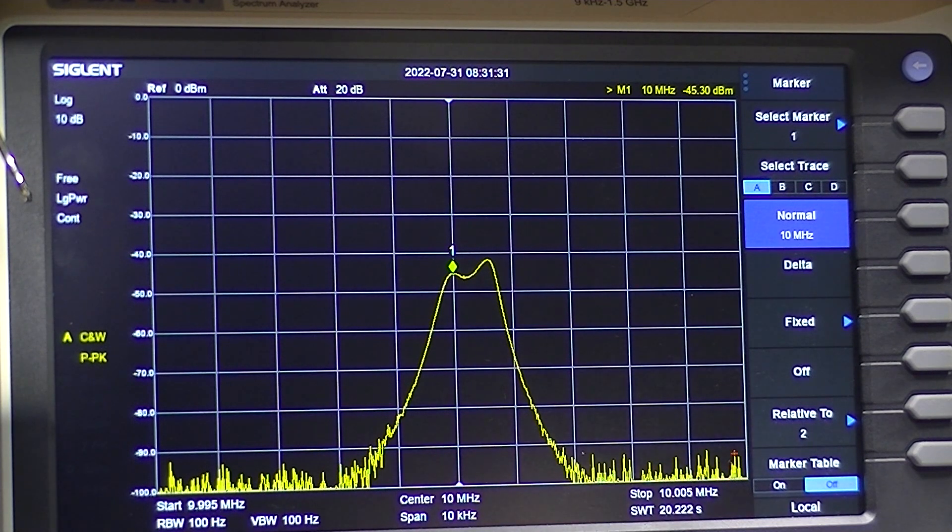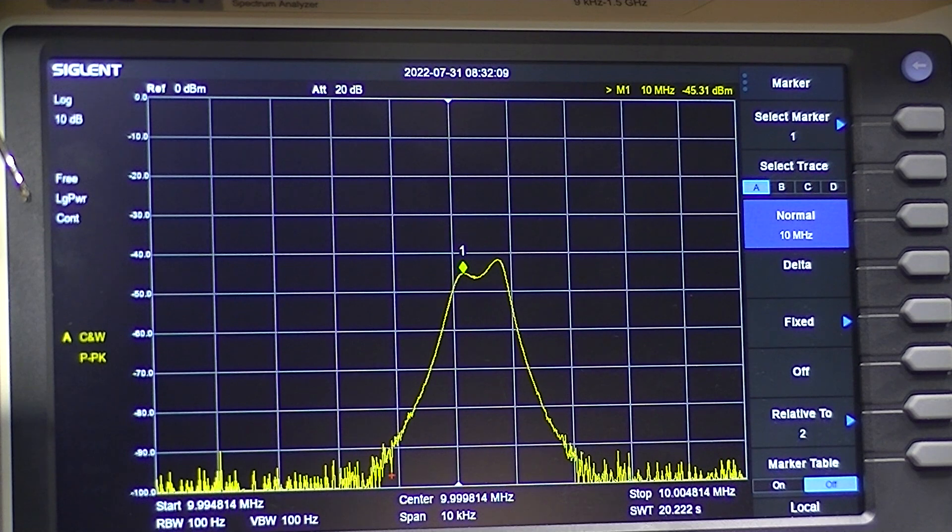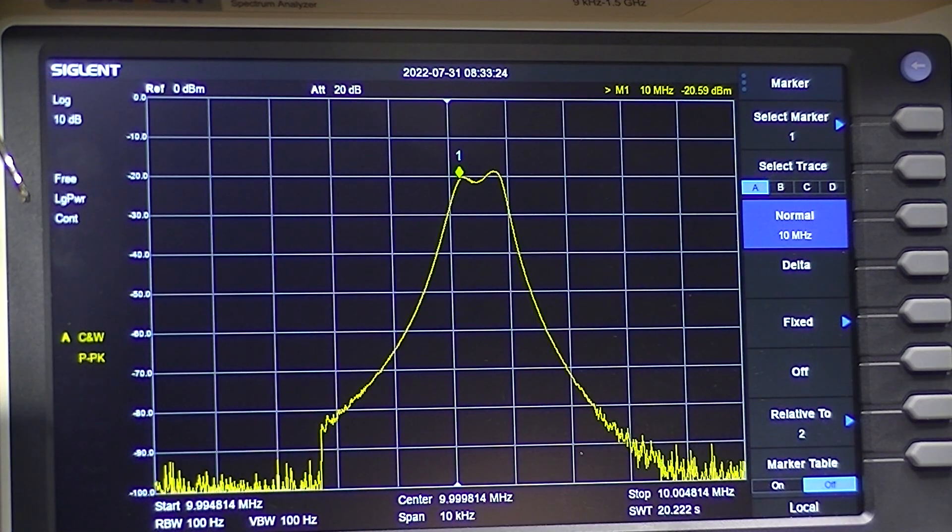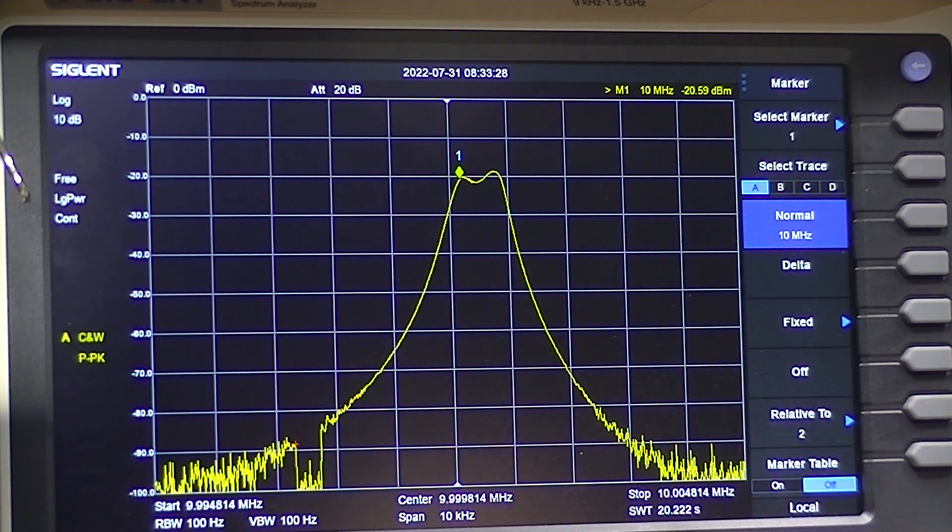Alright, here we are with the 10 MHz amplifier, minus 80 dB in. Okay, so there's the gain at 10 MHz without the preamp. And with the preamp it's minus 20 dBm output. So that gives us a total of 80 dB gain with the system hooked up at 10 MHz.